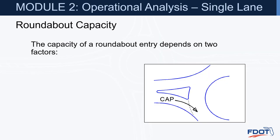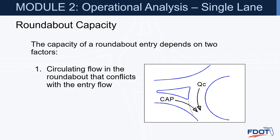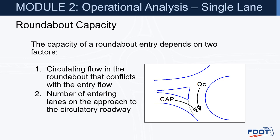Roundabout capacity. The capacity of a roundabout entry depends on two factors: circulating flow in the roundabout that conflicts with the entry flow — the more traffic circulating, the harder it is to enter — and the number of entering lanes on the approach to the circulatory roadway. A two-lane entry will have more capacity than a single-lane entry, allowing more vehicles to enter for every gap in circulatory traffic.